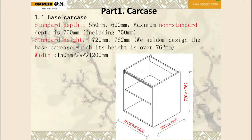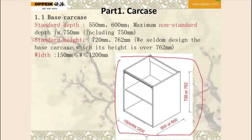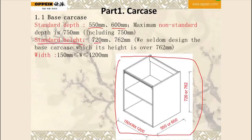Part 1, carcass — and this is the base carcass. The standard depth of base carcass is 550 or 600 mm, and the maximum non-standard depth is 750 mm, including 750 mm. The standard height is 720 mm or 762 mm, and we shall not design the base carcass with a height over 762 mm. The width can range from 115 mm to 1,200 mm.